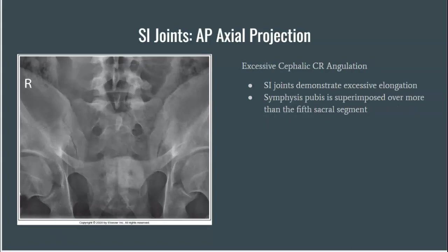In a projection with excessive cephalic central ray angulation, the sacral and SI joint will be demonstrated as excessively elongated, and the symphysis pubis will be superimposed over more than only the fifth sacral segment.